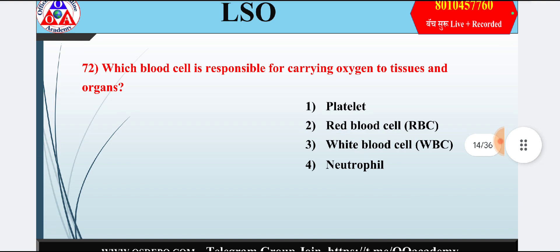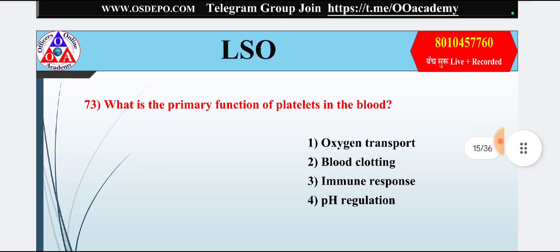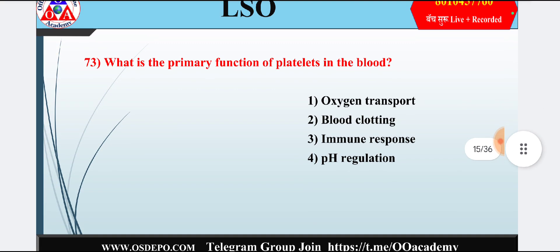Question 12: Which blood cell is responsible for carrying oxygen to tissues and organs? Option 1: platelet; option 2: red blood cell; option 3: white blood cells; option 4: neutrophil. Answer is option 2 — red blood cells.